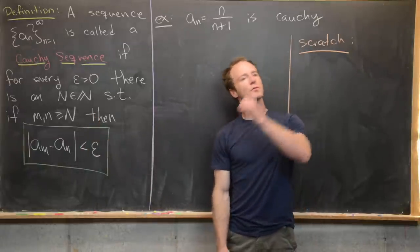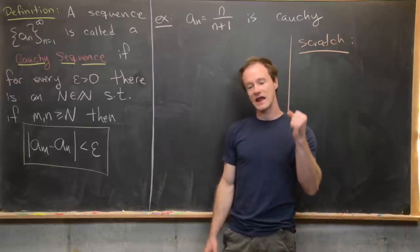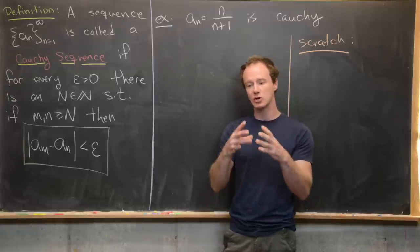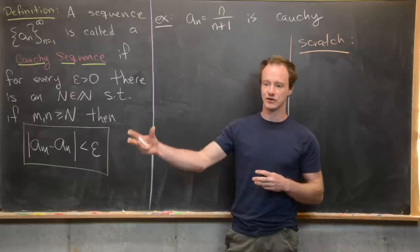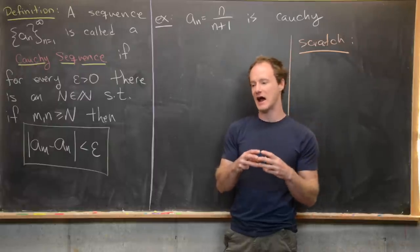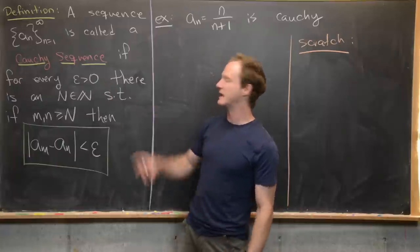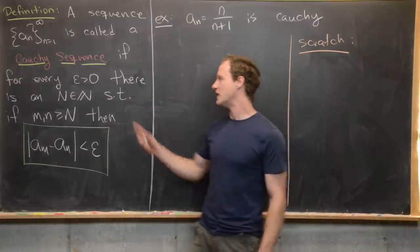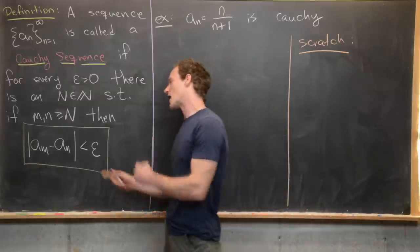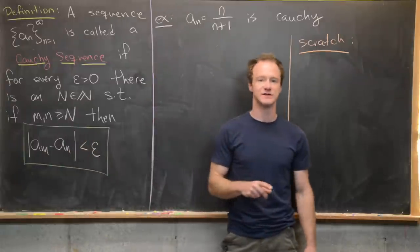We want to look at this separately from a convergent sequence by seeing that here we're guaranteed that all of the elements of the sequence get close to each other after a certain point, and perhaps not close to a given limit. We can pick a very small epsilon and then find a natural number where after that point the terms of the sequence are very close together.